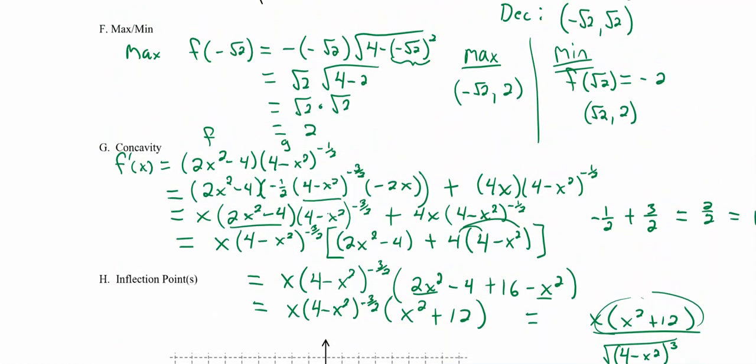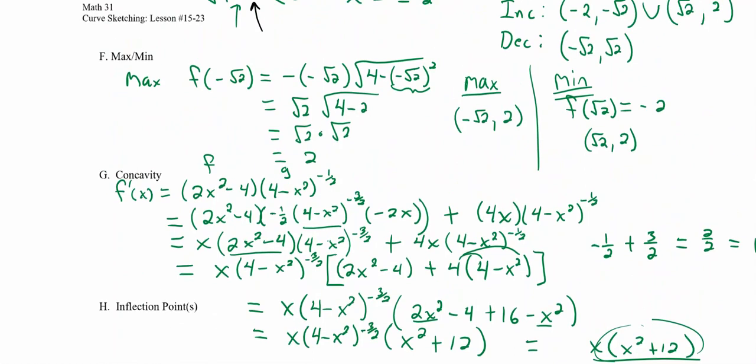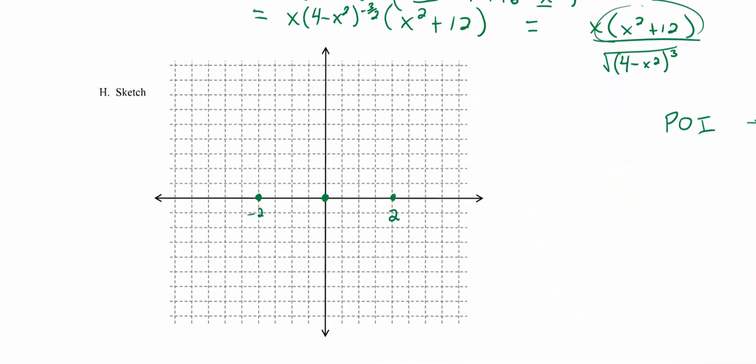And two, okay. We also know we have a maximum at negative root two, two. Okay, so negative root two is going to be at like negative 1.4. So if this is one, then this would be like negative 0.4 there. So there, and then I'll make it up to there. So this will be two on my axis up there. Okay, there's that one.